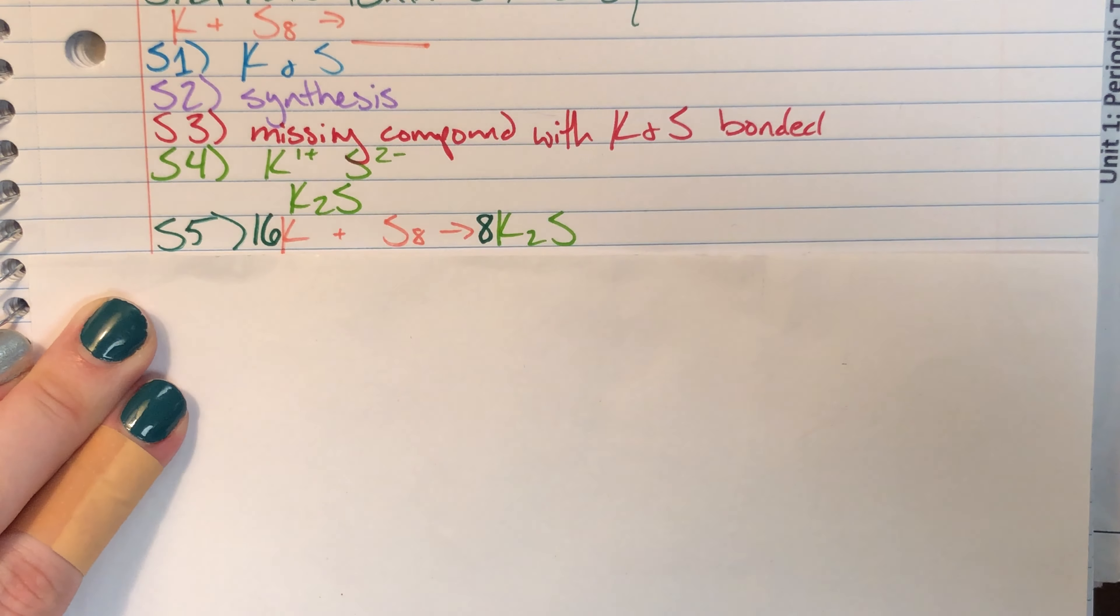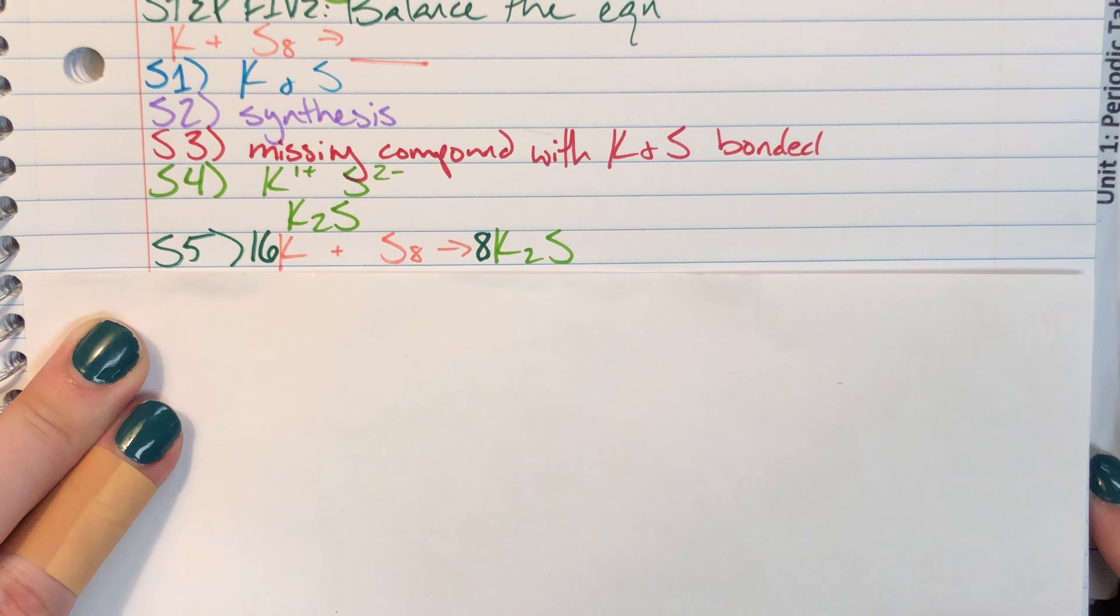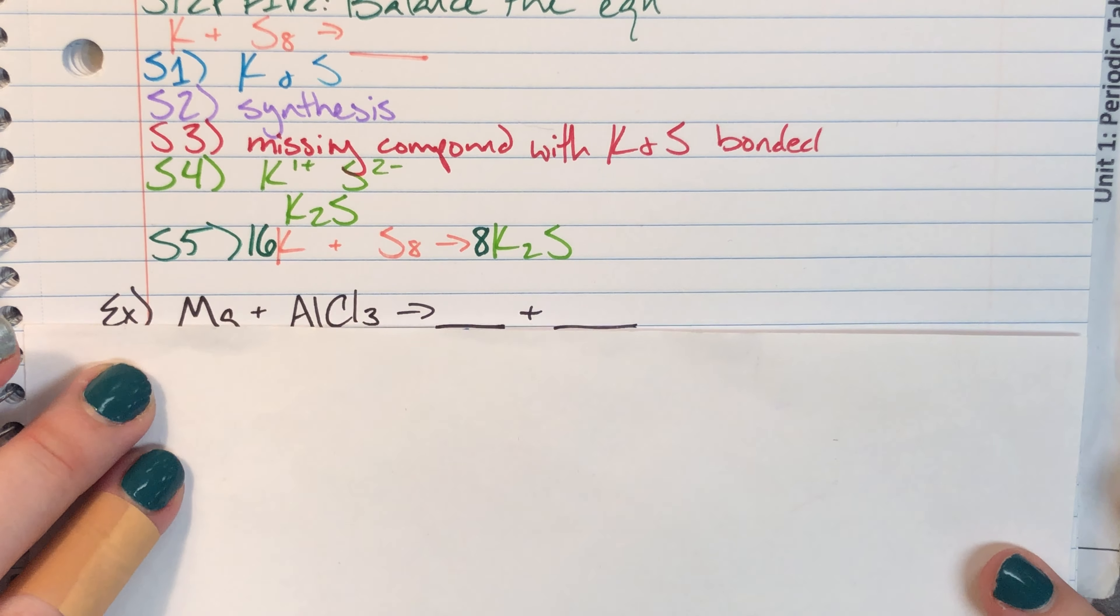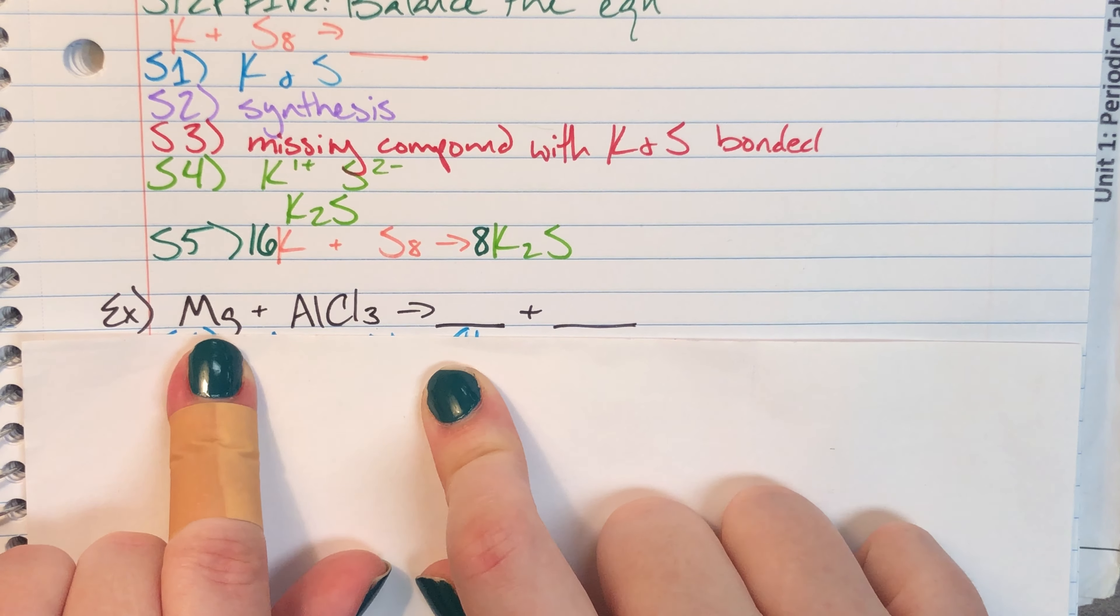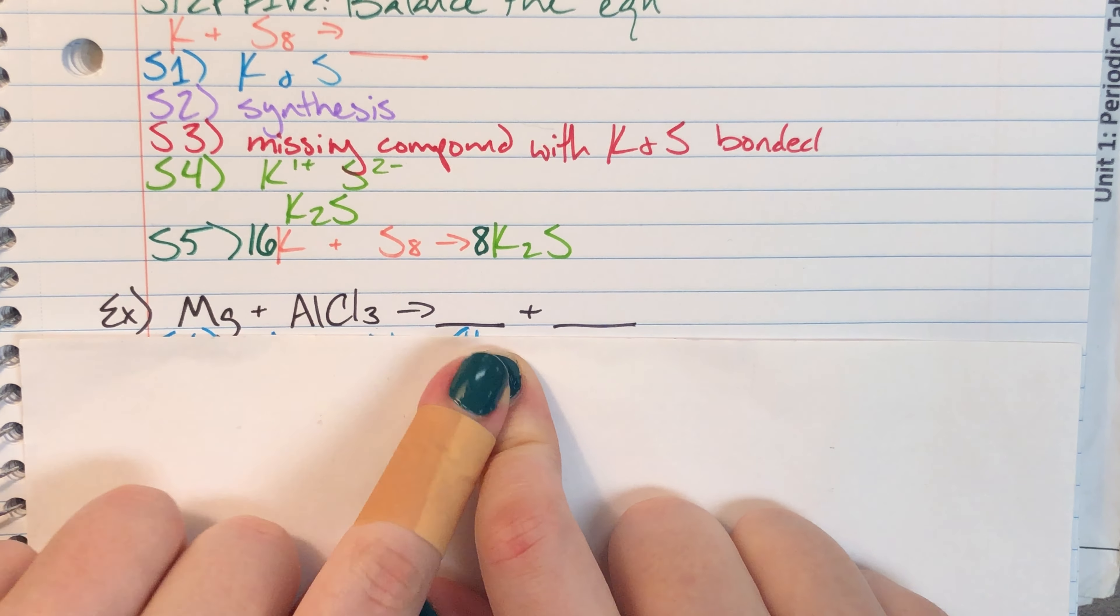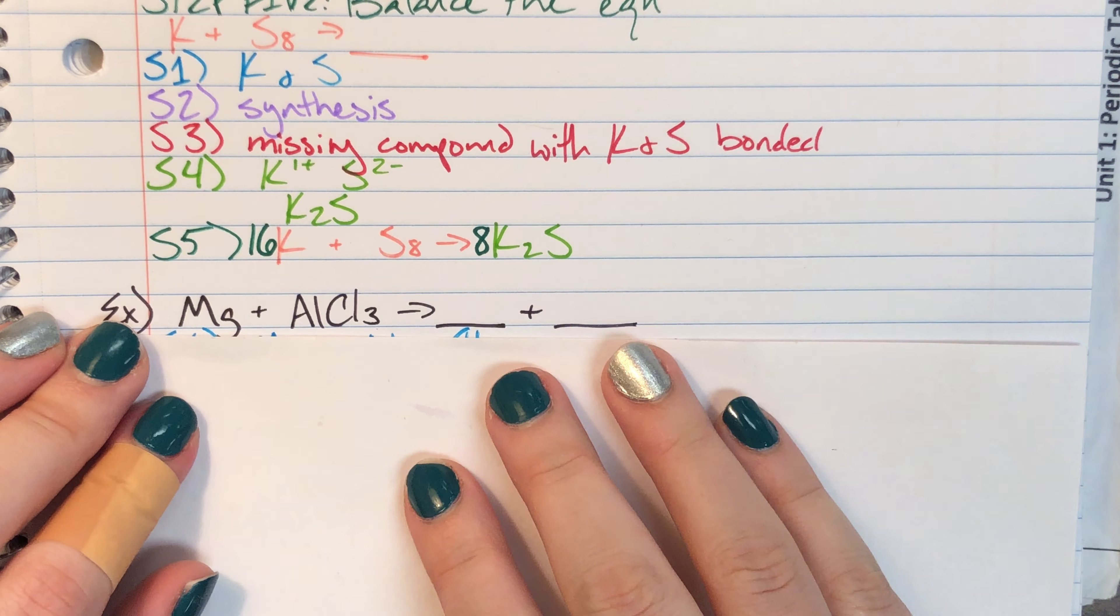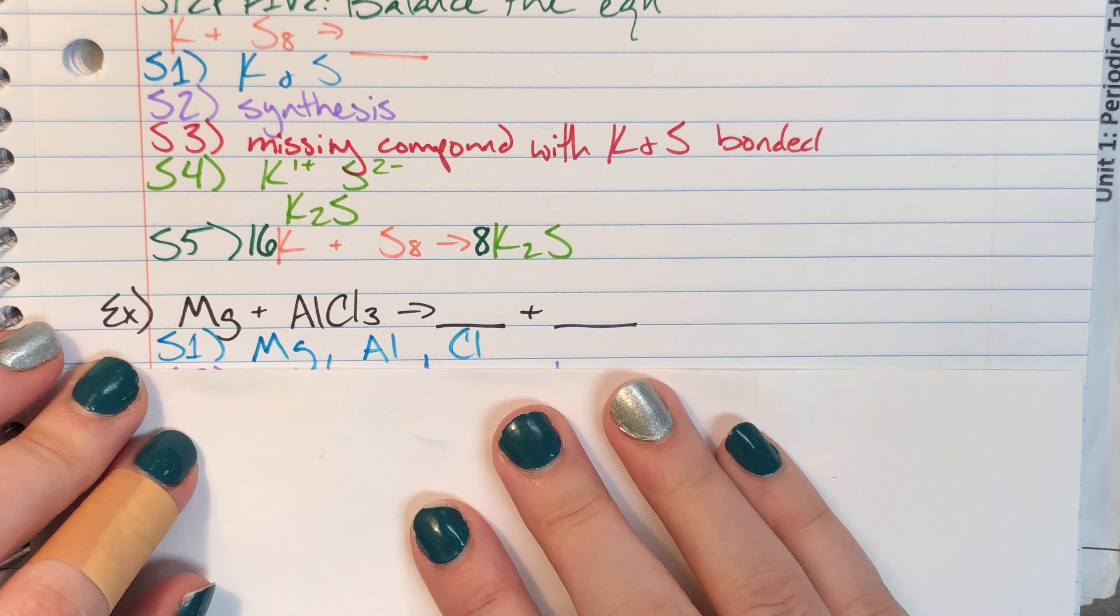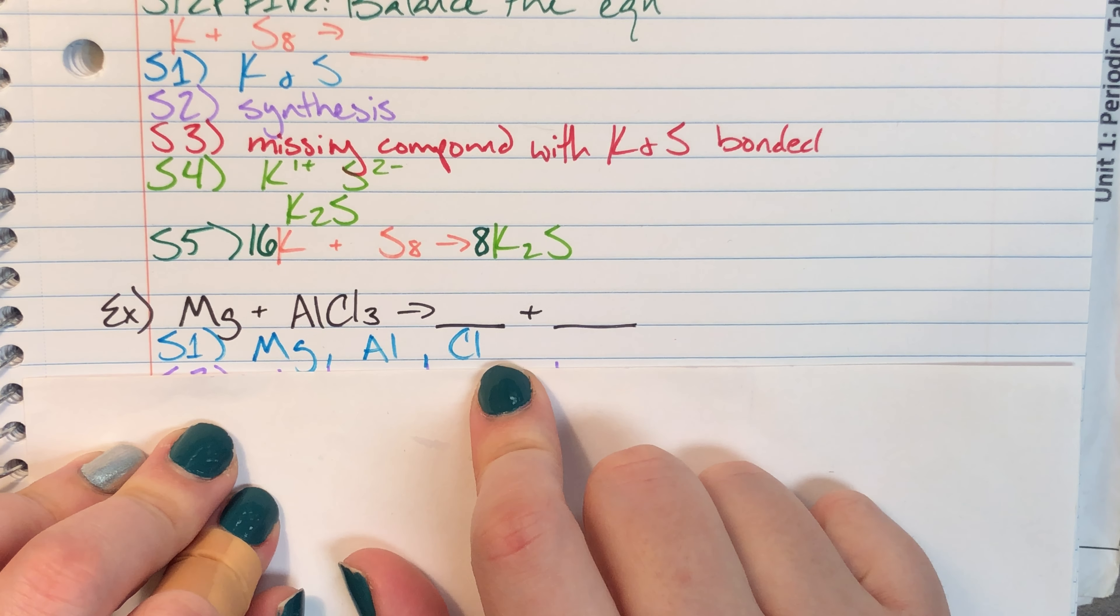So we're gonna do this one more time and I am going to look at this instead. So I have magnesium being added to aluminum chloride and I know I'm going to be producing two products. So the very first thing I'm gonna do is I'm going to identify what I have here. I have magnesium, aluminum, and chlorine.